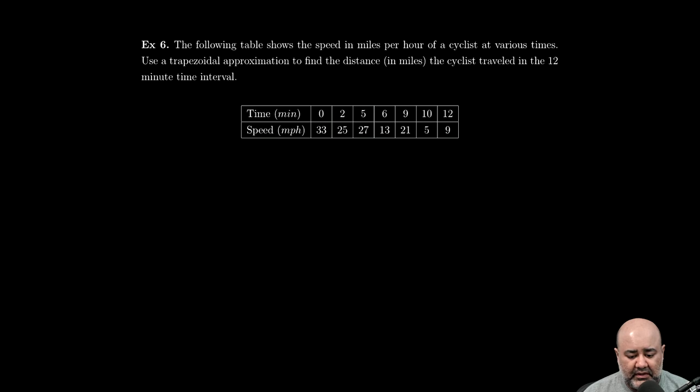All right, so here, I don't know if we'll finish this, but let's try. Following table shows the speed in miles per hour of a cyclist at various times. Use a trapezoidal approximation to find the distance in miles. Again, approximation, so no equal signs anywhere. To find the distance in miles that the cyclist traveled in the 12-minute time period.